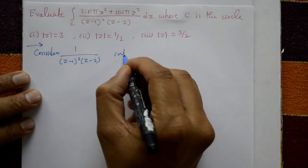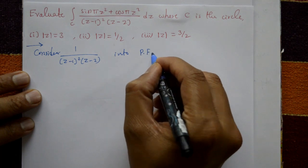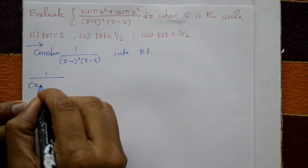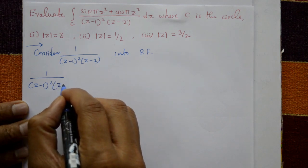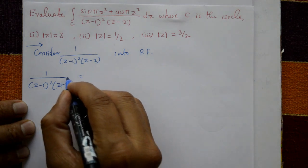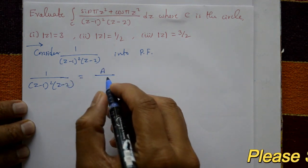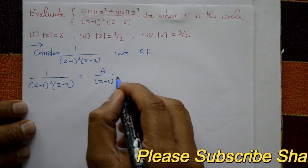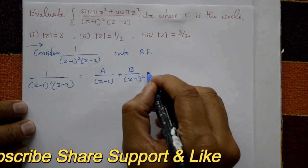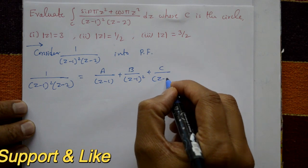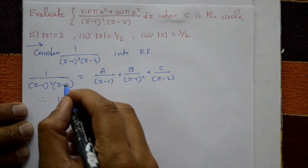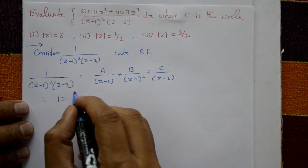Resolving 1 over (z-1)² (z-2) into partial fractions: we write it as A/(z-1) plus B/(z-1)² plus C/(z-2). Cross-multiplying, we get 1 = A(z-1)(z-2) + B(z-2) + C(z-1)².